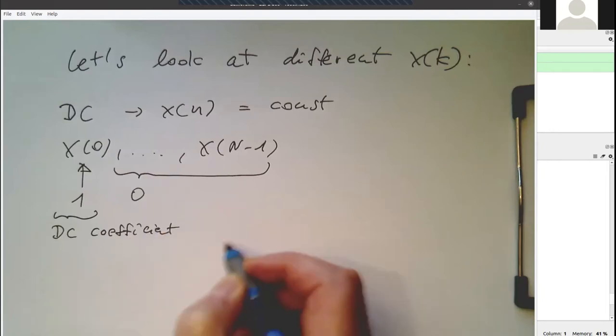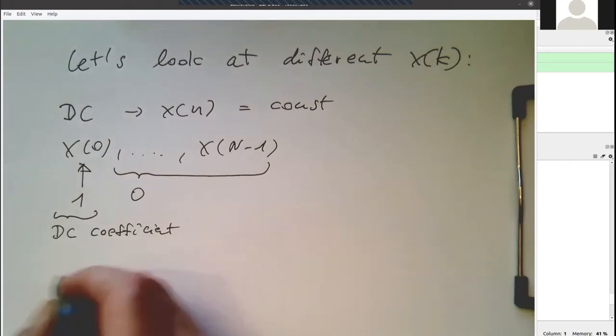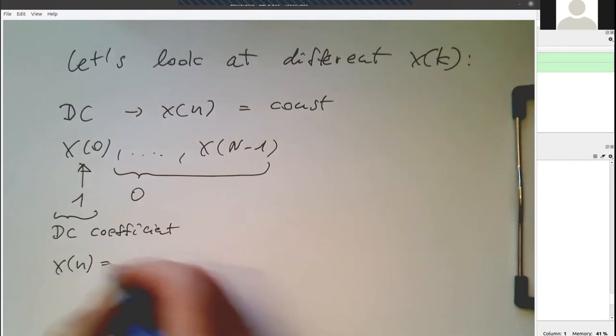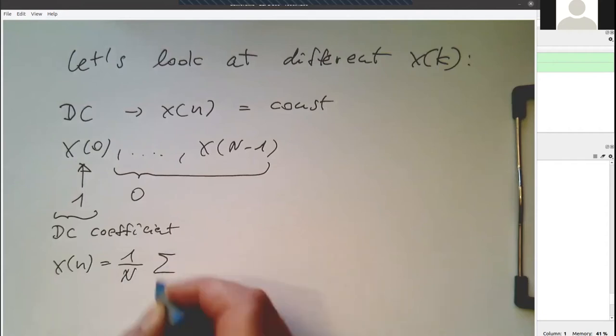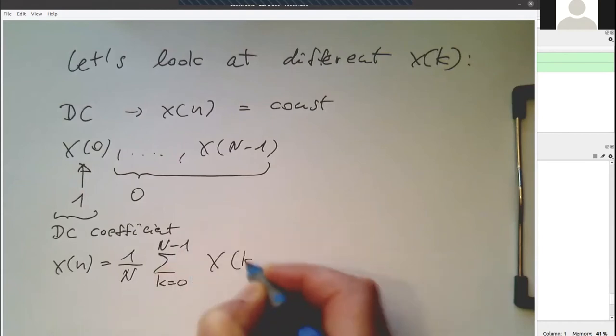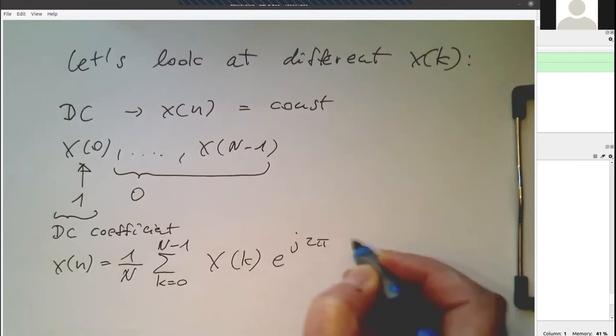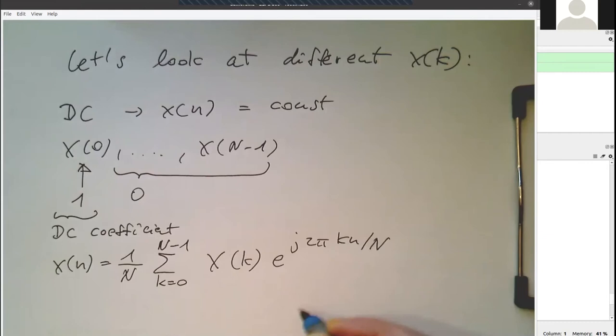So if we write this down with our formula here again, if you write x of n, then it's 1 over n, sum k equals 0 to n minus 1. And then we have here our x of k, so our frequency coefficients, then j, 2 pi, k, n, divided by the number of samples.